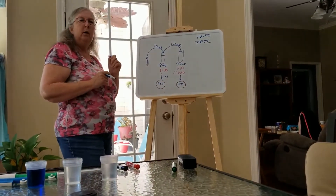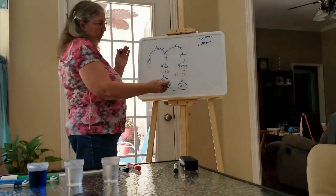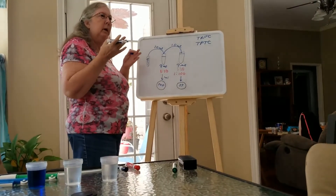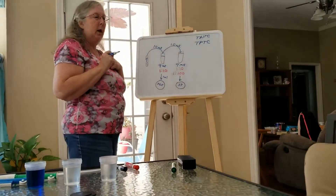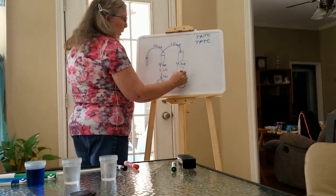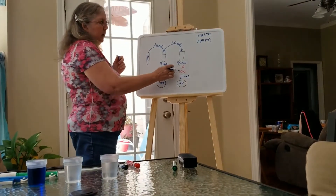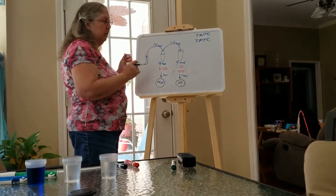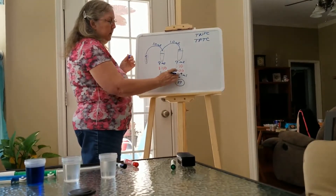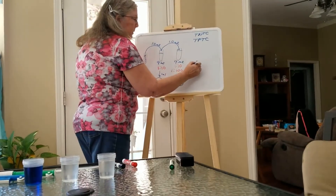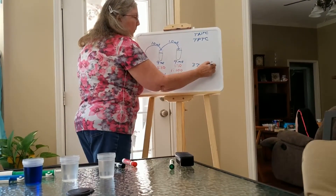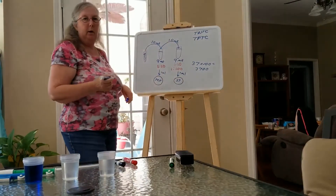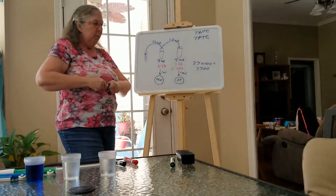Let's say on this plate there are 37 colonies — you fell within the countable range. Those 37 colonies mean 37 bacteria were placed on that original plate. Because you added one milliliter, the dilution factor stays the same. To find how many bacteria are in the original solution, multiply 37 by the dilution factor: 37 times 100 equals 3,700 bacteria per milliliter. That's how you do it — pretty straightforward.